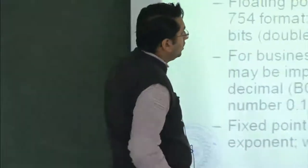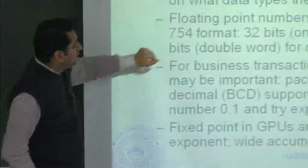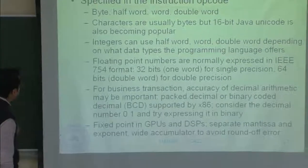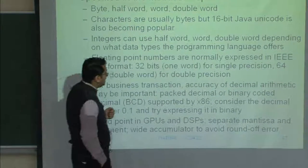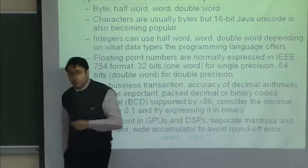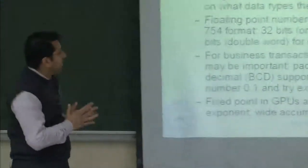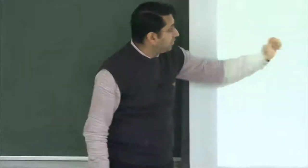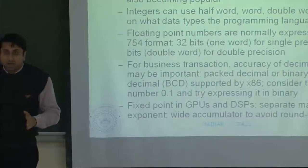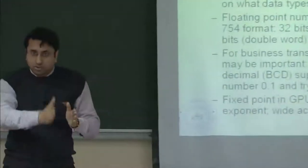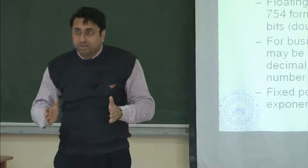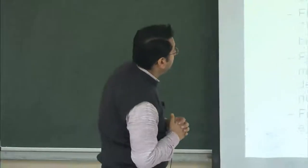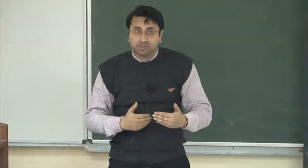Floating point numbers are expressed in IEEE 754 format: 32 bits (one word) for single precision, 64 bits (double word) for double precision, and 80-bit extended precision. These are standards. When the compiler sees a double variable, it generates a 64-bit double-precision instruction if the machine supports it. Otherwise, the value is broken into two 32-bit single-precision numbers and instructions interpret them together. We will see how 32-bit MIPS manages 64-bit data types when we study MIPS.